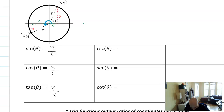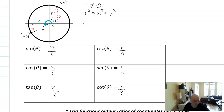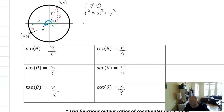The reciprocal functions are just the reciprocals: cosecant is r over y, secant is r over x, and cotangent is x over y. Note that since we're on a circle, the radius is not equal to zero, and r squared equals x squared plus y squared. It is possible for x and y to be zero, so we might have some undefined values to come back to later.